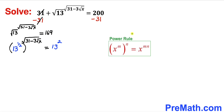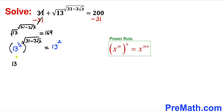Let's recall the power rule of exponents: if we have x to the power m, and then to the power n — in other words, two nested exponents — we can write this as x to the power m times n. Here we have the exponent 1/2 and another whole exponent, so we multiply them out. The left hand side becomes 13 to the power of (1/2) times the square root of 31 minus 3 times square root of x, equals 13 squared.